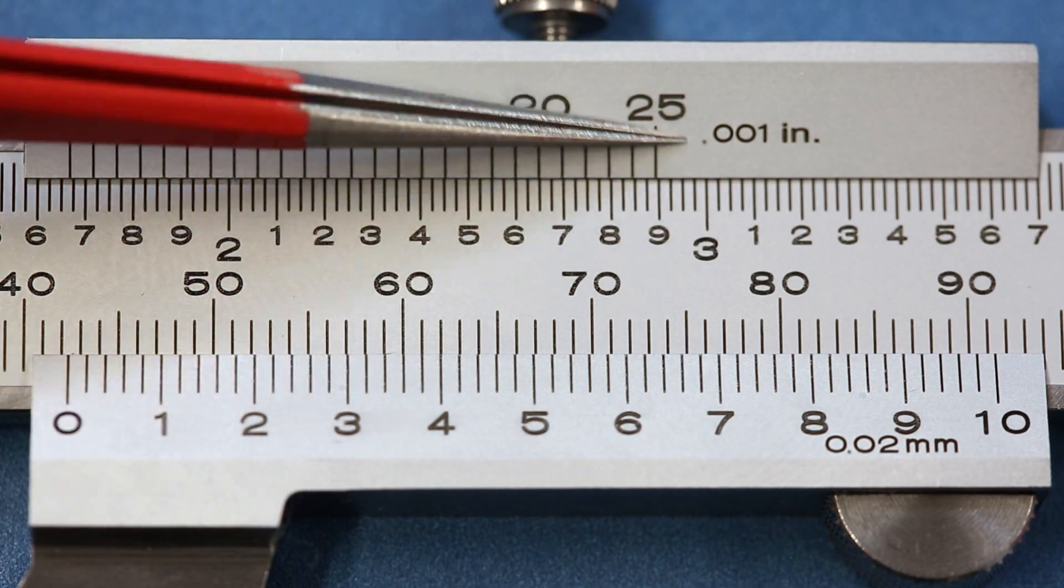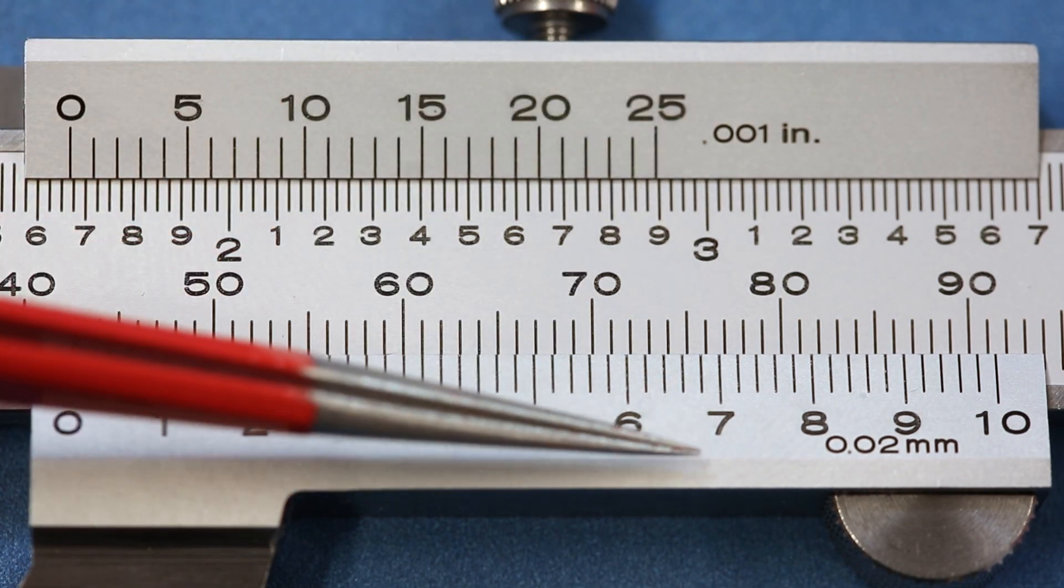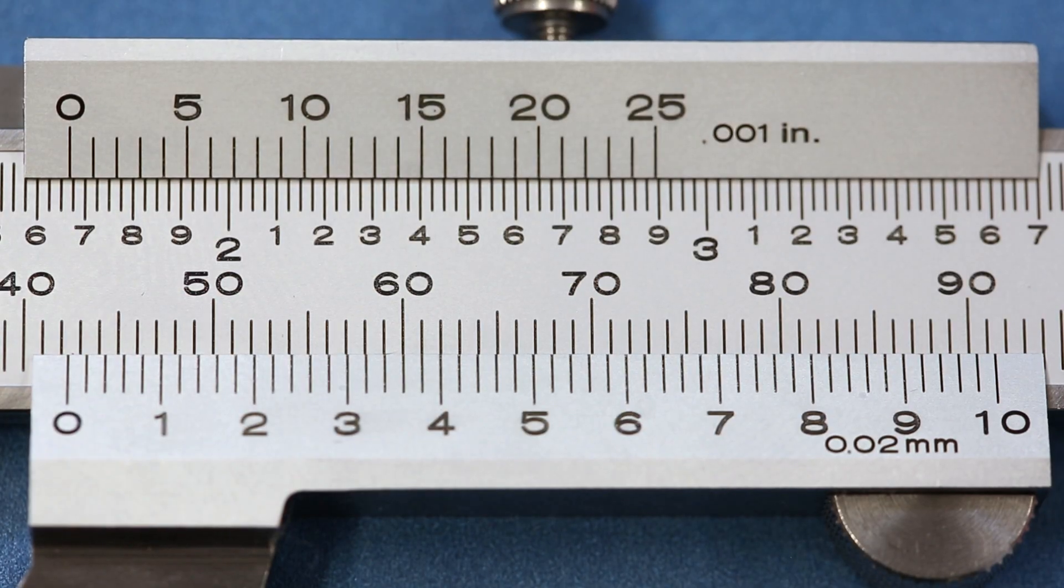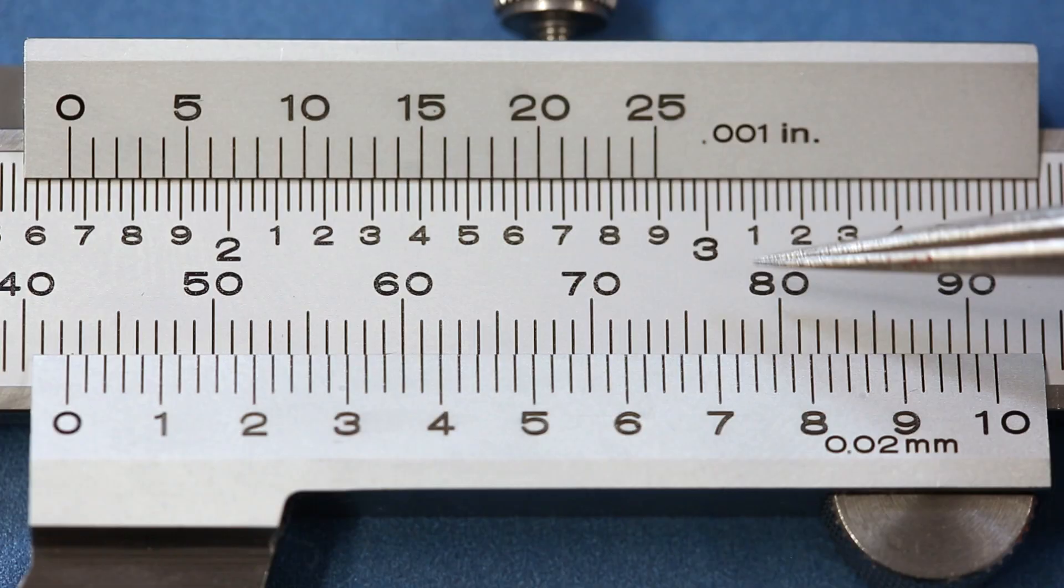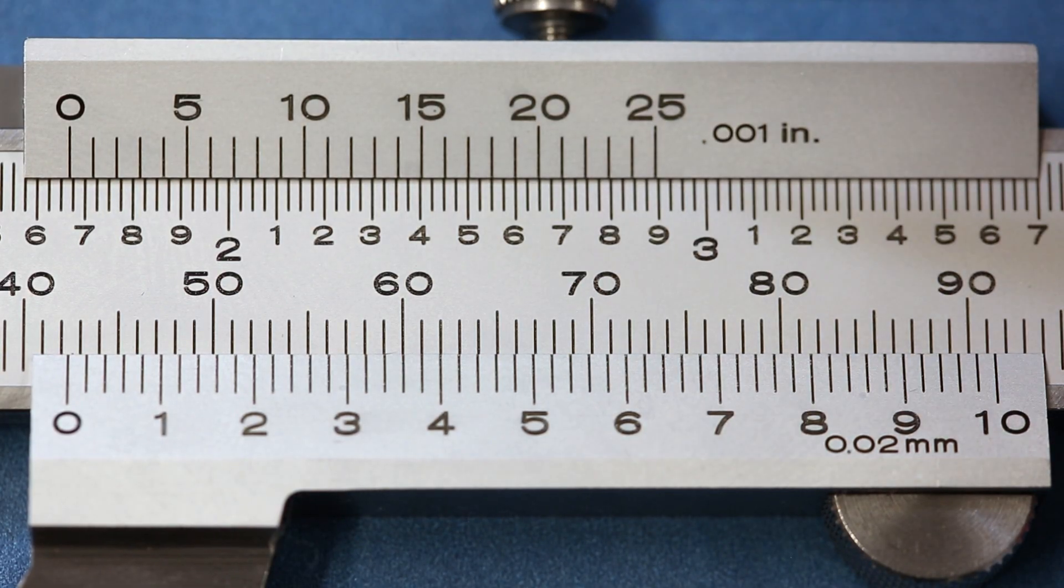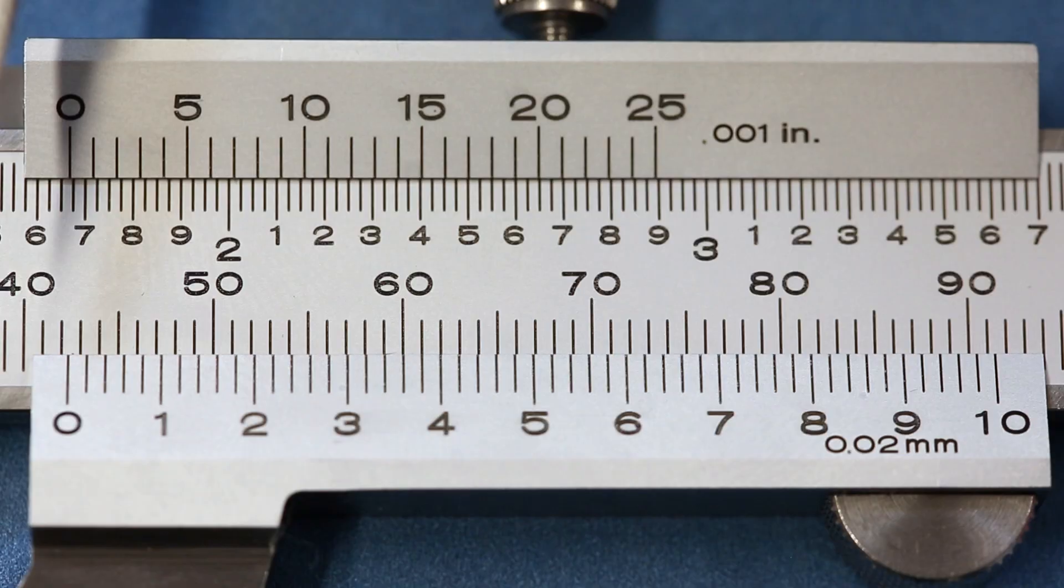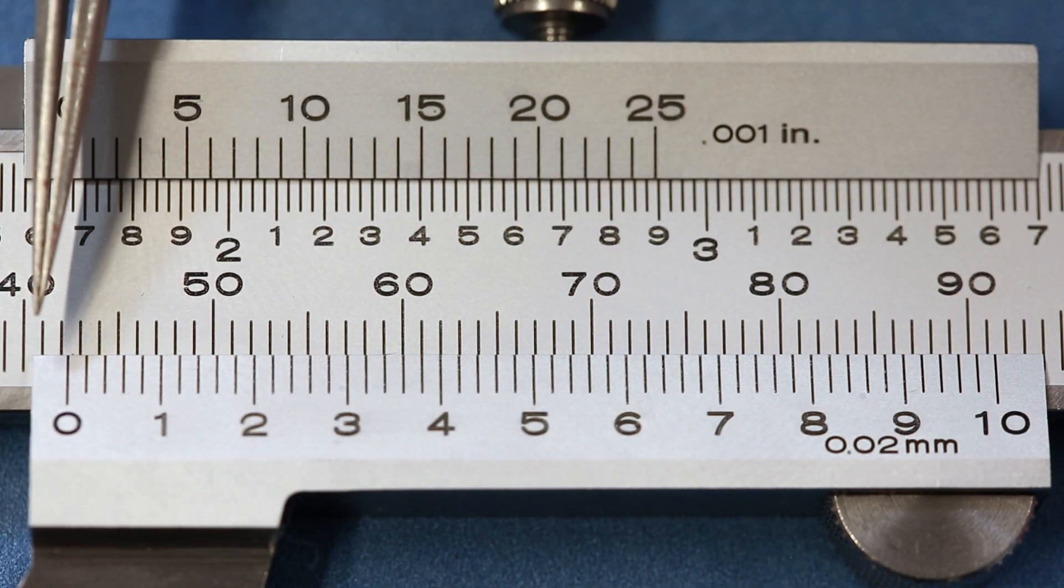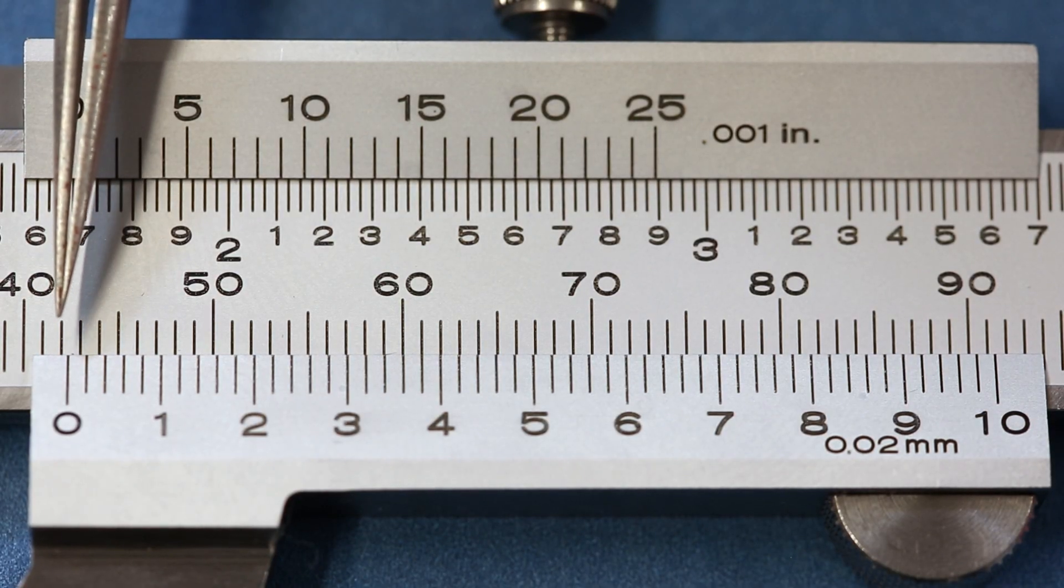Vernier calipers can be made with both imperial and metric scales, but they require the most effort of the three to read. The fixed part is known as the main scale, and the slider is printed with the vernier scale. Find the largest measurement on the main scale, just left of the zero on the vernier scale.